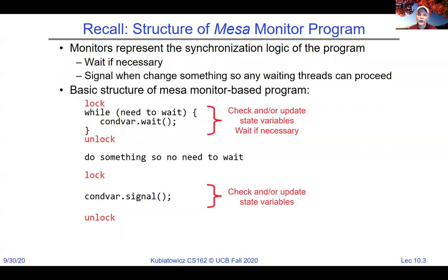The rule is you must hold a lock when doing any condition variable operations. The general pattern for MESA-scheduled condition variables is: grab the lock, check some condition, and potentially wait if it hasn't succeeded. Because it's MESA-scheduled, when you wake up from wait, you always recheck the condition in a while loop, since someone may have made the condition invalid again before you resume running.